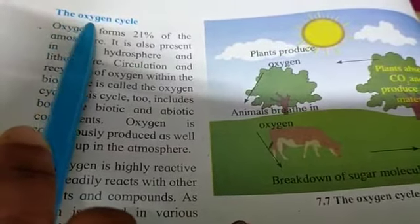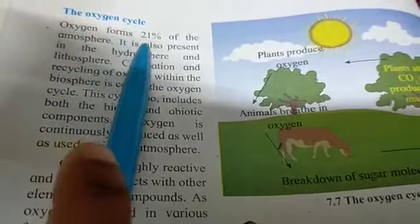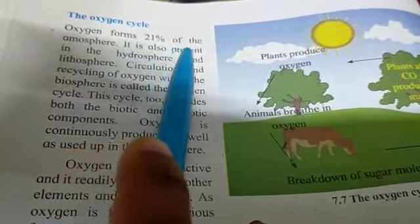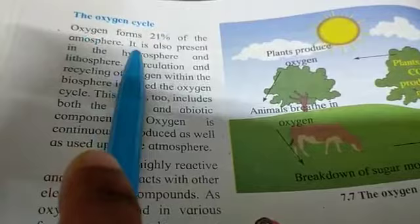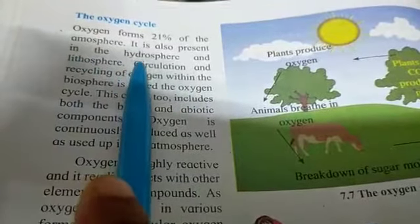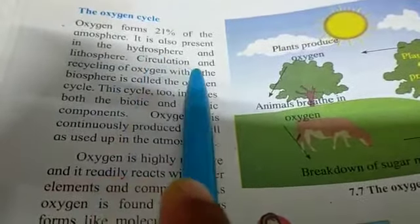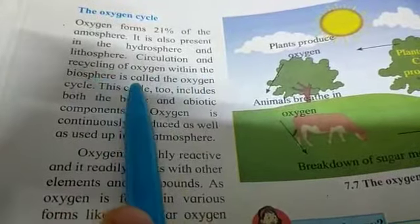The student is going to learn about the Oxygen cycle. Oxygen forms 21% of the atmosphere. Our atmosphere has 21% oxygen. It is also present in the Hydrosphere and Lithosphere — in water and in the soil as well. The circulation and recycling of oxygen within the Biosphere is called the Oxygen cycle.